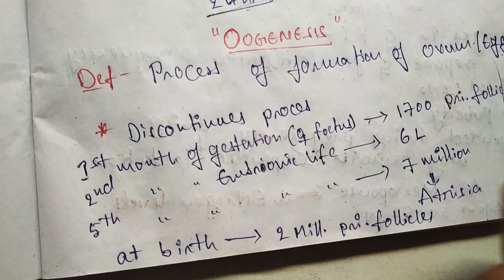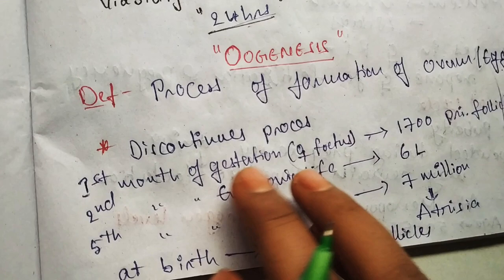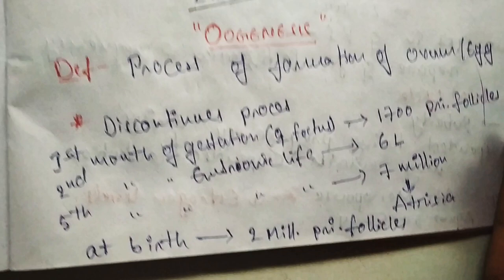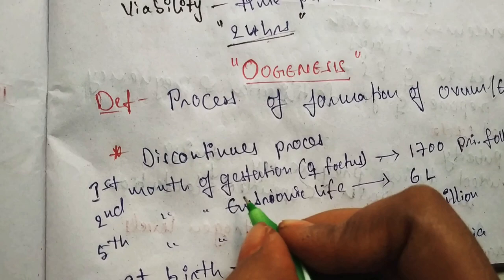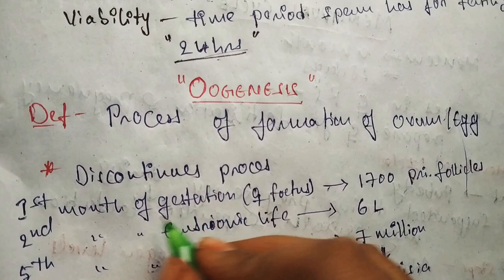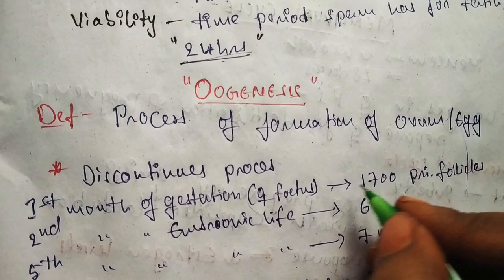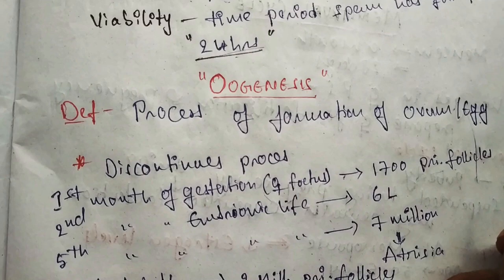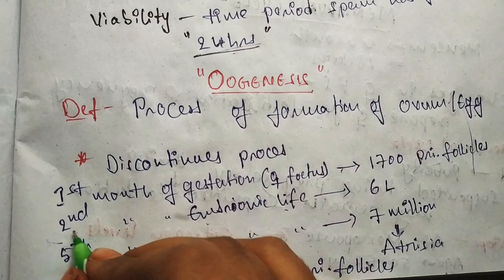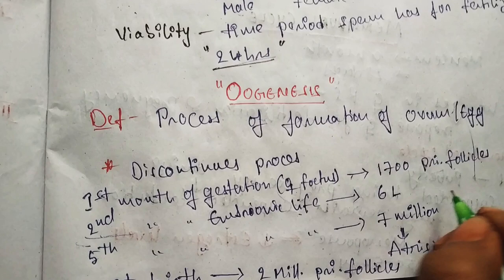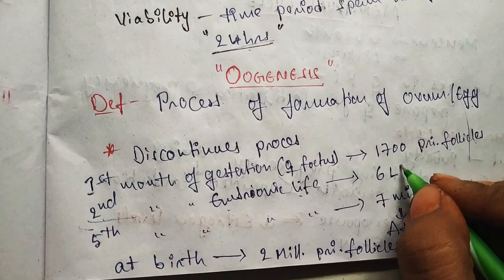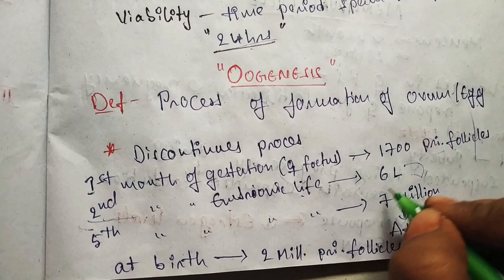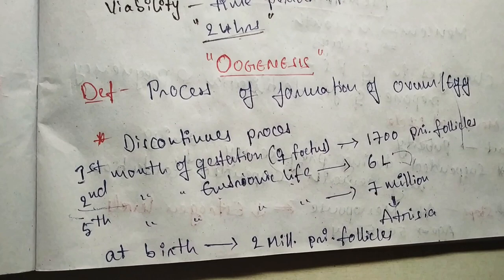Oogenesis is a discontinuous process. In general introduction, it begins in the first month of gestation. First month of gestation means pregnancy — if the fetus is female, there are 1700 primary follicles produced. In the second month of embryonic life, it doubles and triples. By the 5th month of embryonic life, 7 million primary follicles are present.